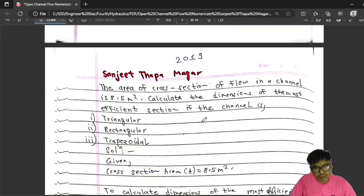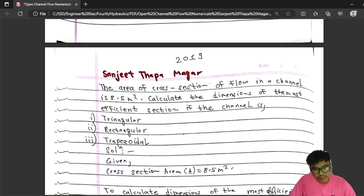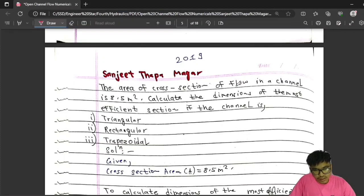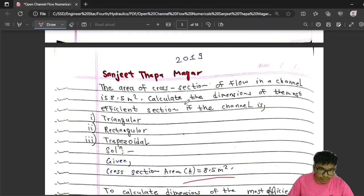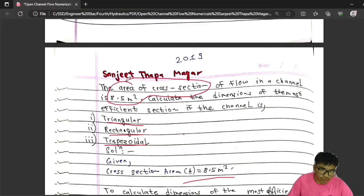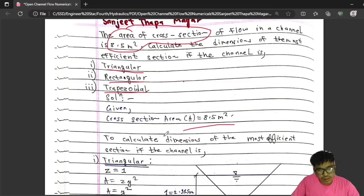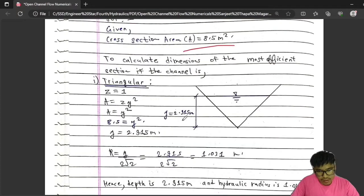The next question was asked in 2019. The area of cross-section of flow in a channel is 8.5 m². Calculate the dimensions of the most efficient section if the channel is: first, triangular; second, rectangular; third, trapezoidal. The cross-sectional area is 8.5 m² for all three cases.